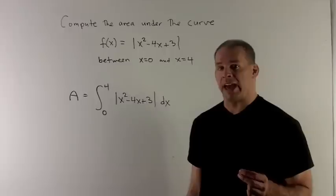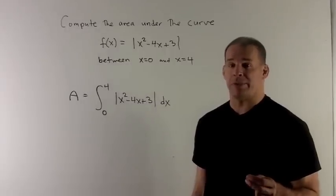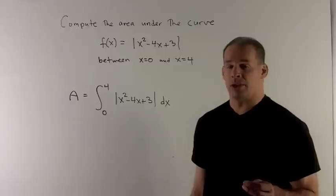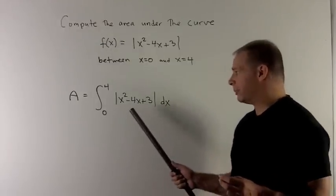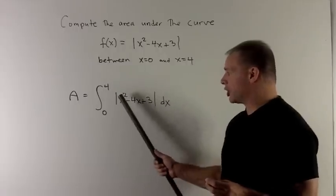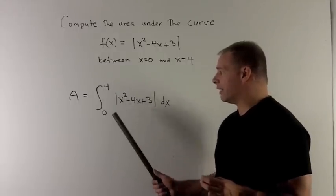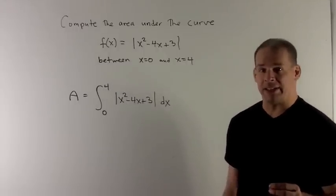First, the fundamental theorem of calculus gives me a recipe for computing this area, assuming our function is completely positive. Take the antiderivative of this function, evaluate it at 4, evaluate it at 0, and then take the difference.